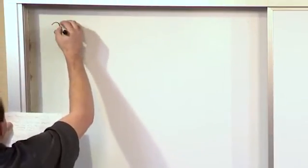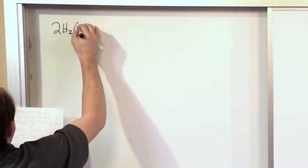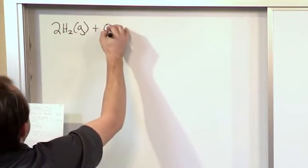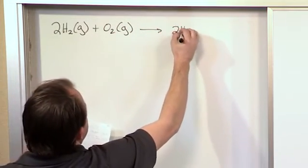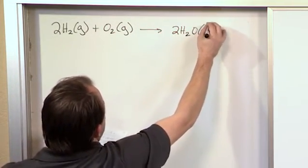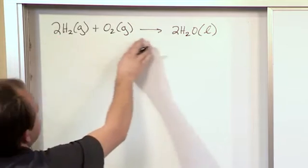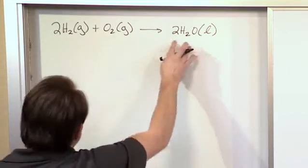All right, now for the first problem that we're going to do here, we use the following reaction: 2H2 gas plus O2 gas. Very common reaction, right? Yields 2H2O and that's a liquid. Now this is balanced. You can see four hydrogens, four hydrogens, two oxygens, two oxygens.